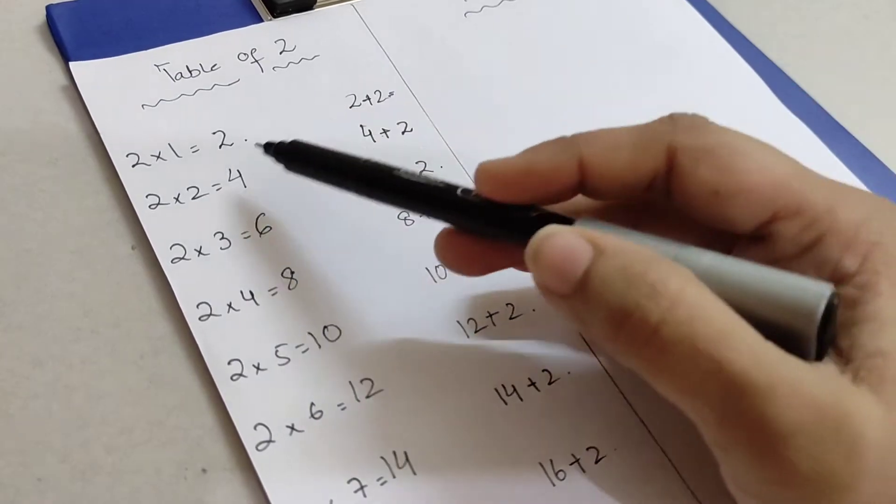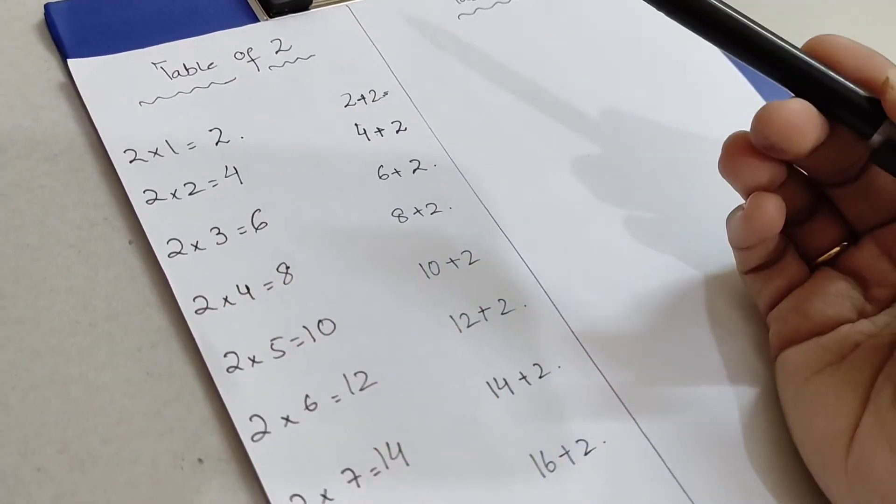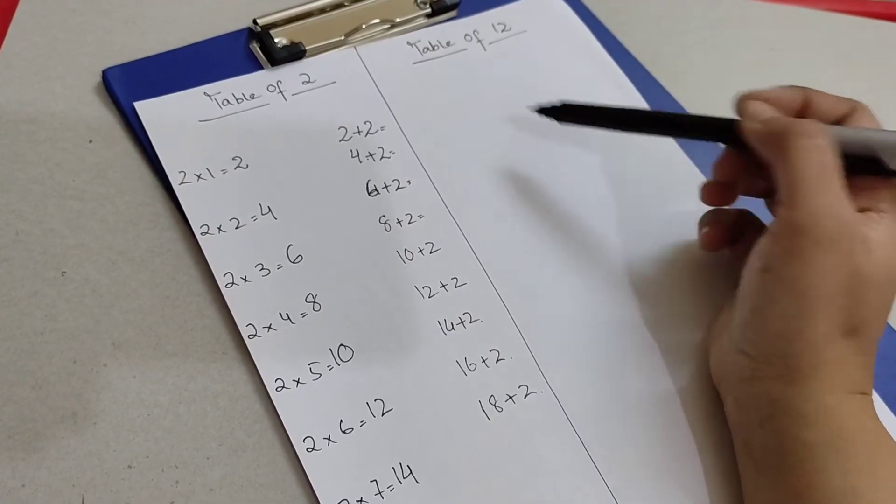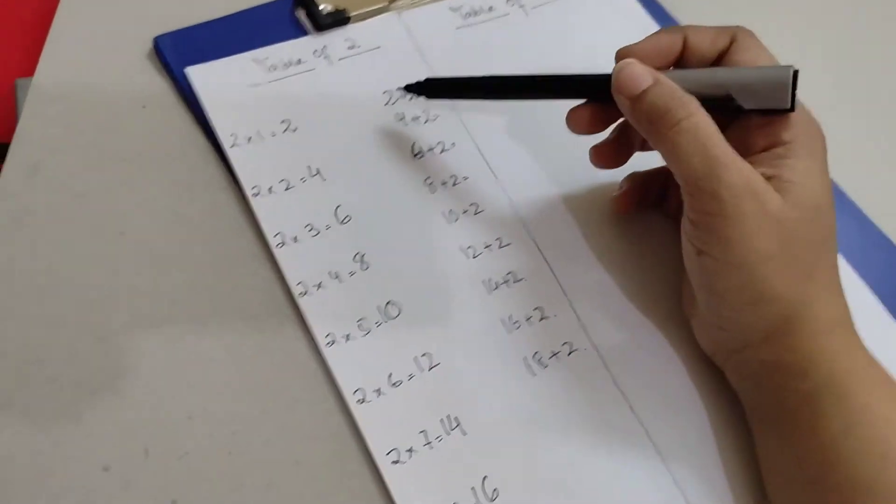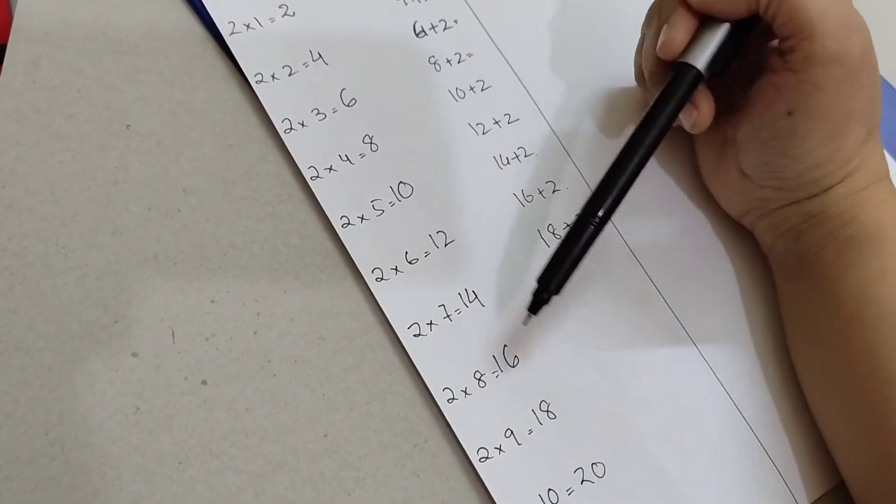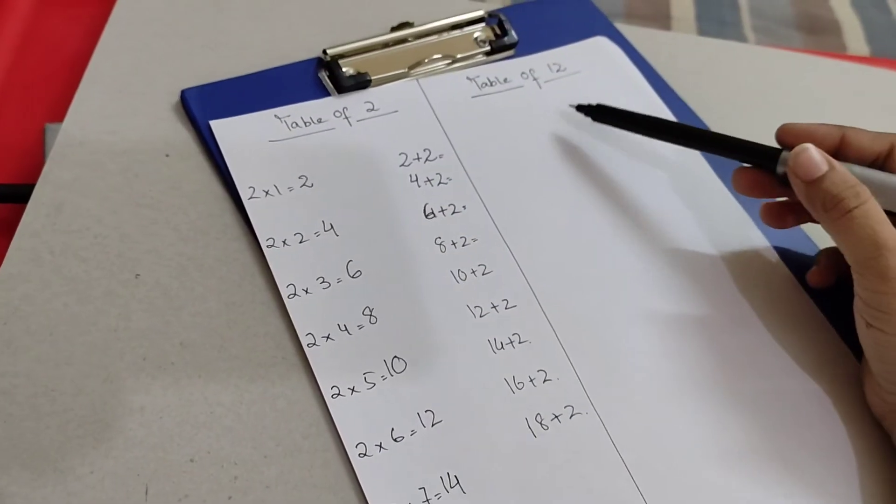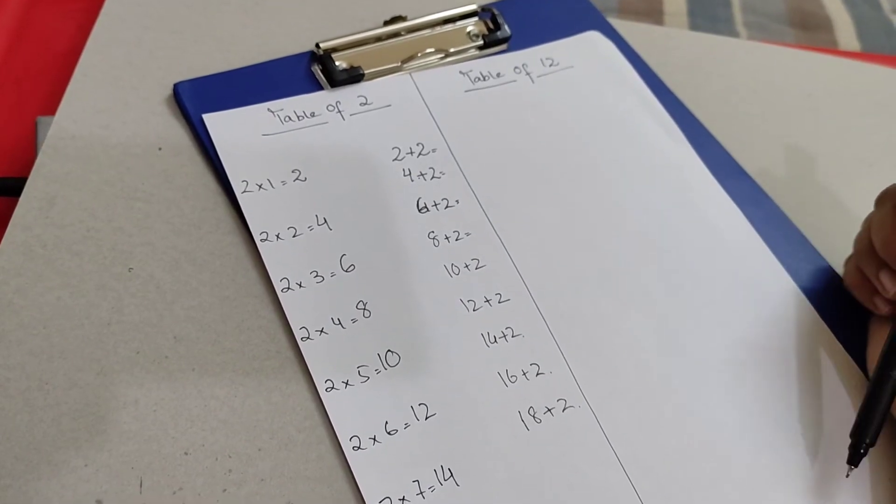Let's move on to twelve times table. So you got your answers for two times table. Let me write the numbers here and come back.